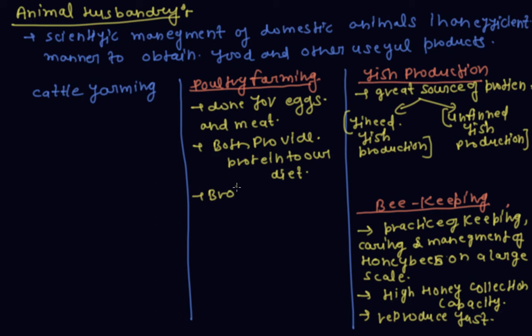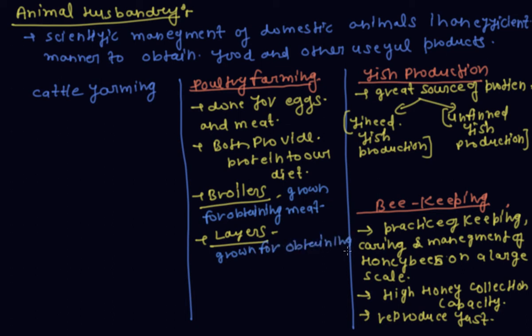First is broilers and second is layers. In broilers, the birds grown for obtaining meat are called broilers. Broilers are grown for meat and are cross-breed.